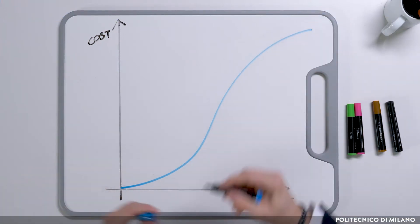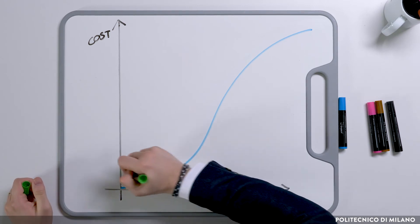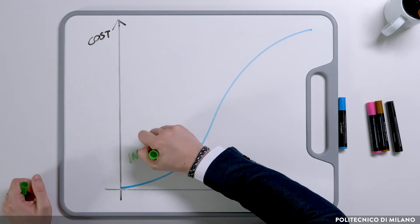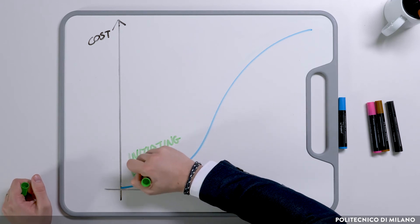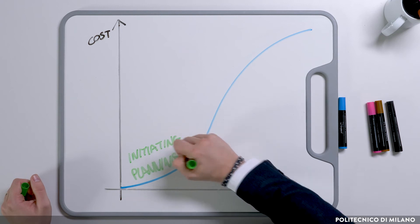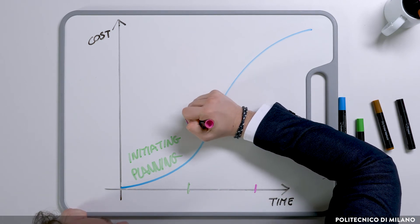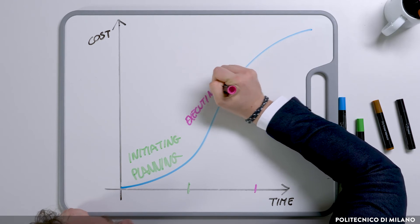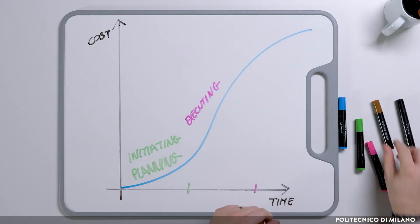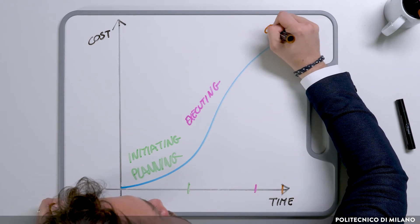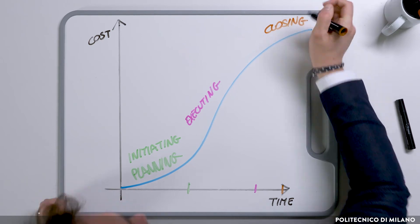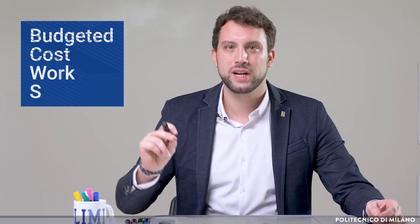The project baseline is usually an S-shaped curve, consistent with the expected resource usage across the phases of the project: a low consumption in initiating and planning, a strong resource usage in the execution phase when material is being used and work is actively happening, and then again a less expensive phase in closing. The time-phase budget also goes by different names — it is known as the baseline or BCWS, Budgeted Cost of Work Scheduled, which we'll see is the starting point of the controlling activities.